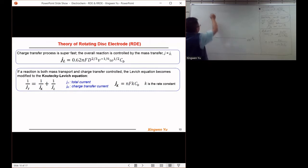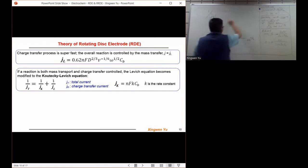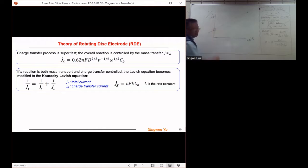If we plot one over j_t versus one over square root of the rotation, the intercept won't be zero. The intercept is related to the kinetic current, the charge transfer current. So the intercept will be one over j_k and the slope...